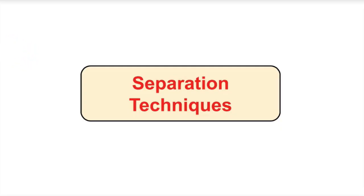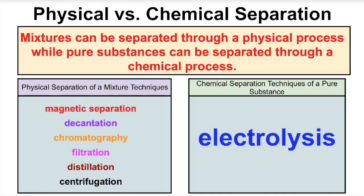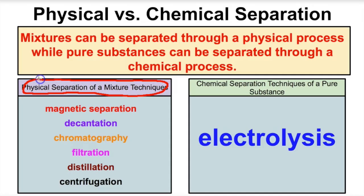Hey everybody, this is Mr. Millings and today we're going to learn about separation techniques. In an earlier video we discussed how all matter can be classified into two main categories, pure substances and mixtures. And we said that if you have a mixture and you wanted to separate the components of that mixture, then a physical process would have to take place in order to separate the components of that mixture.